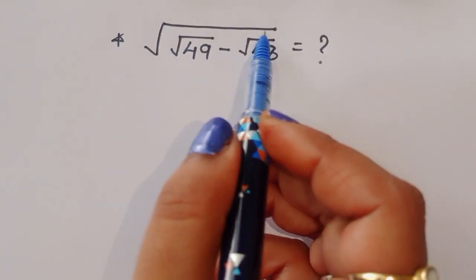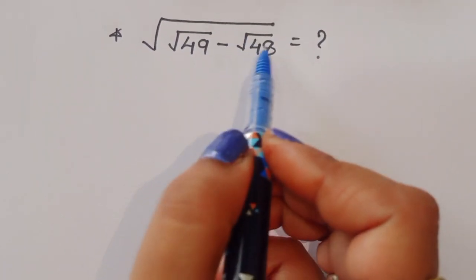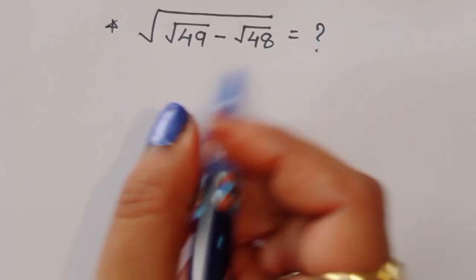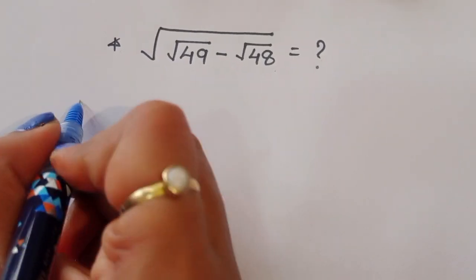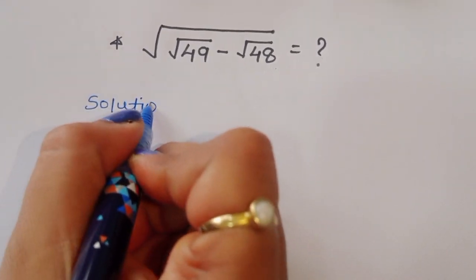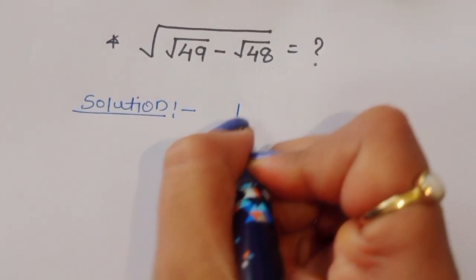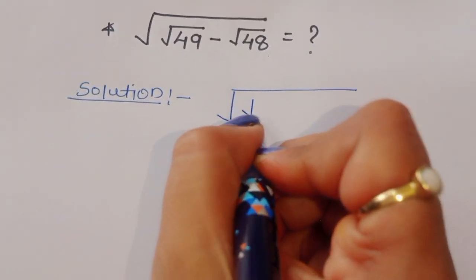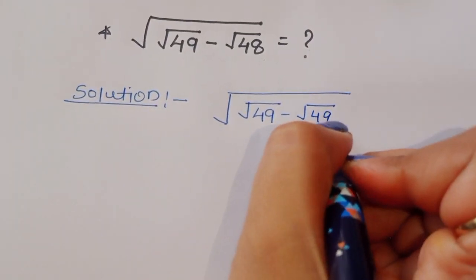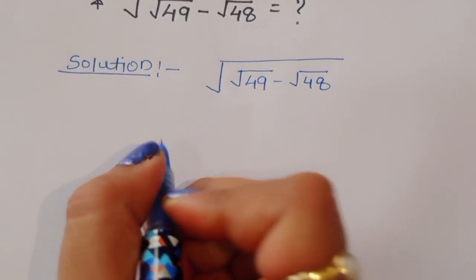The question is given: square root of square root 49 minus square root 48, is equal to what? We have to find out the value of this term. Let's see the solution.